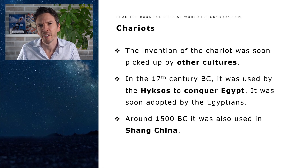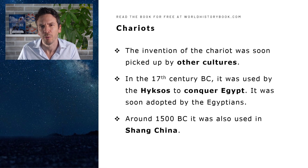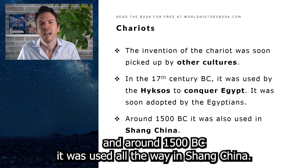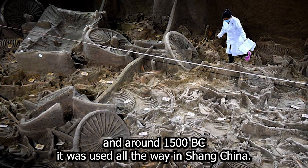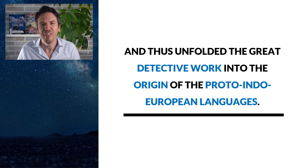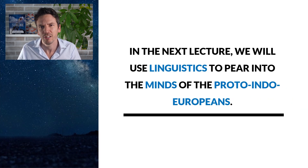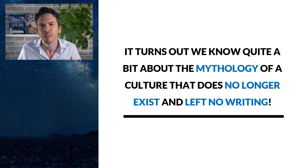The invention of the chariot was soon picked up by other cultures. In the 17th century BC, for instance, it was used by the Hyksos, who conquered Egypt for a while, and it was soon adopted by the Egyptians themselves. And around 1500 BC, it was used all the way in Shang, China. And thus unfolded the great detective work into the origin of the Proto-Indo-European languages. In the next lecture, we'll use linguistics to peer into the minds of these Proto-Indo-Europeans. It turns out we know quite a bit about the mythology of a culture that no longer exists and left us no writing, just by studying these languages.